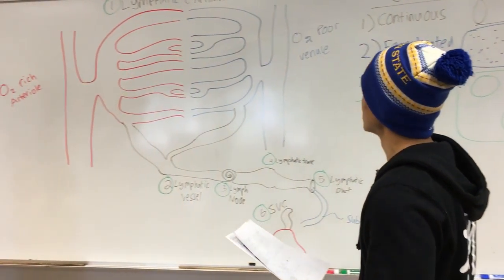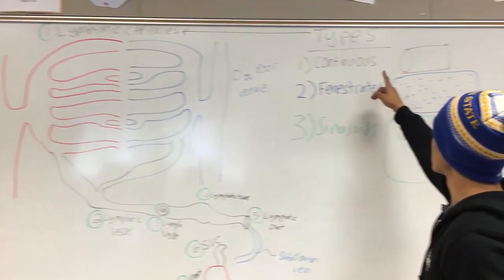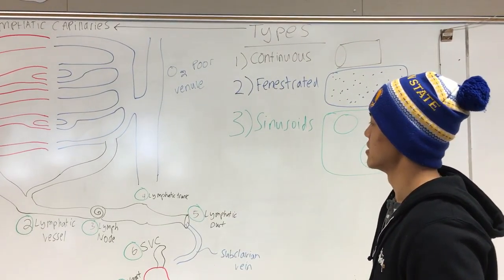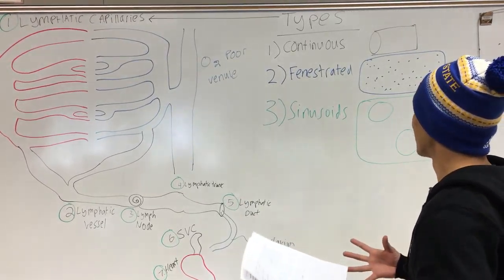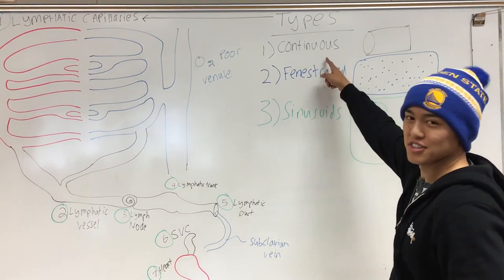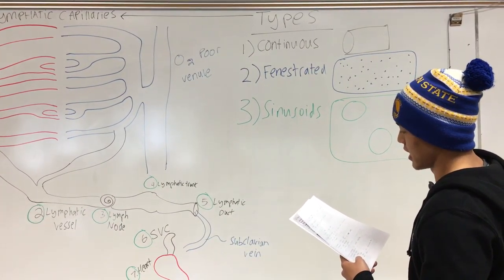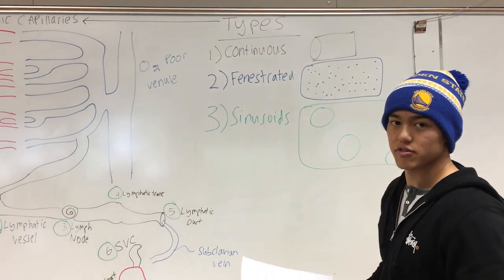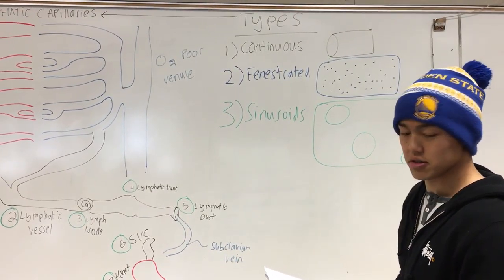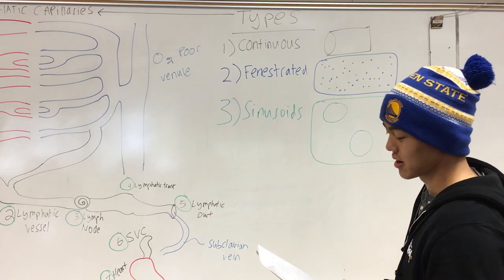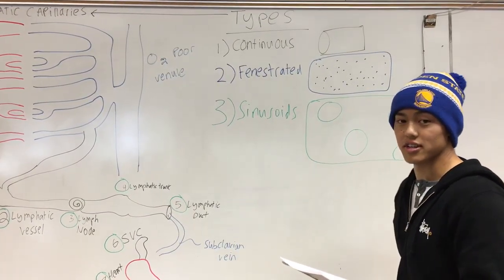Here I drew the lymphatic capillaries. We'll start by talking about the types of capillaries. First is the continuous capillary — it's tube-like, formed with tight junctions for smaller molecules such as O2, CO2, calcium, and amino acids. It's found in the liver and the kidneys.